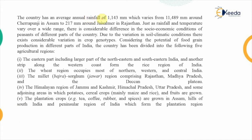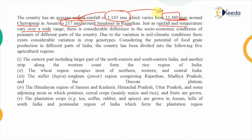There is huge diversity in the weather patterns of India. The average annual rainfall is 1143 millimeters, but the variation is remarkable — maximum rainfall of around 11,000 mm is observed at Cherrapunji in Meghalaya, compared to about 217 mm around Jaisalmer in Rajasthan. Rainfall thus varies from 200 to 11,000 mm across India, and there is similar wide variation in temperature.